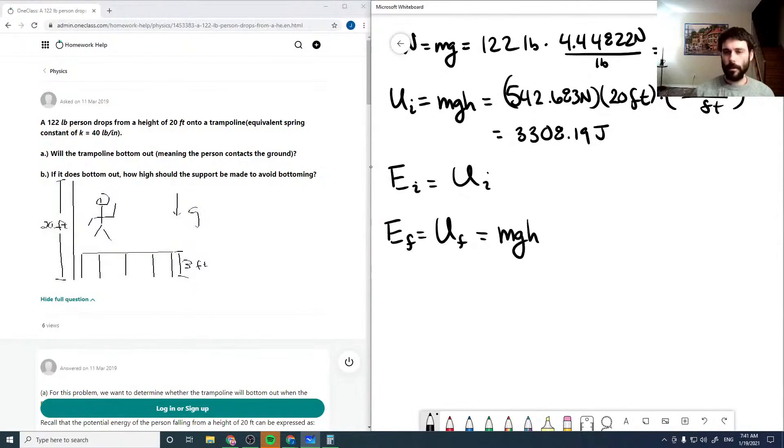So our final potential energy is going to be our gravitational potential energy, mg times our final height, plus our spring potential energy, which is one half k delta x squared.